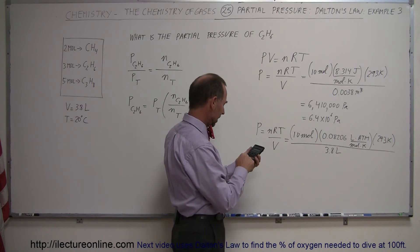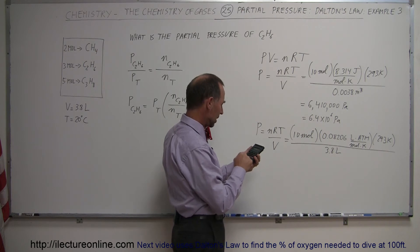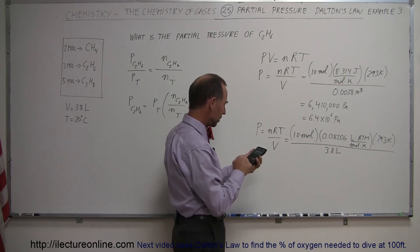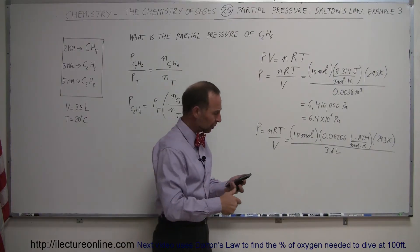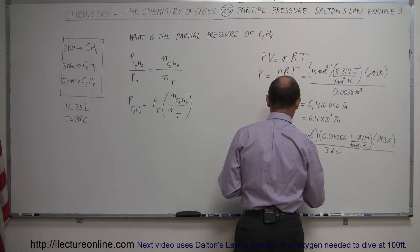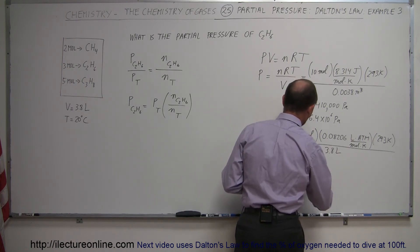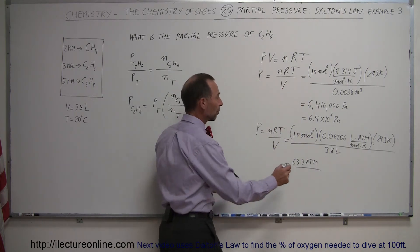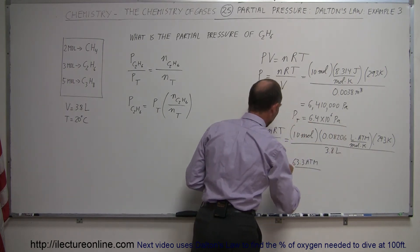So 10 times 0.08206 times 293 divided by 3.8 equals 63.3 atmospheres. We can either use the pressure in atmospheres or the pressure in Pascals. This is of course the total pressure.